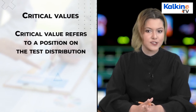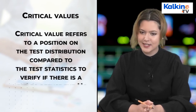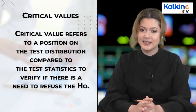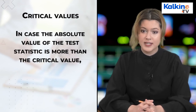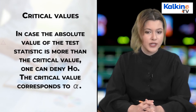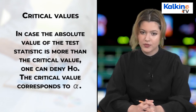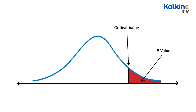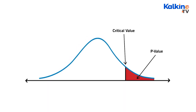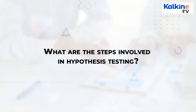Critical value refers to the position on the test distribution compared to the test statistic to verify if there is a need to refuse H0. In the case where the absolute value of the test statistic is more than the critical value, one can deny H0. P-value helps to support or reject the null hypothesis. The p-value is an indication against the null hypothesis — the smaller the p-value, the stronger the proof to reject the null hypothesis.